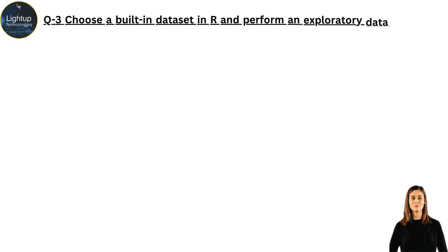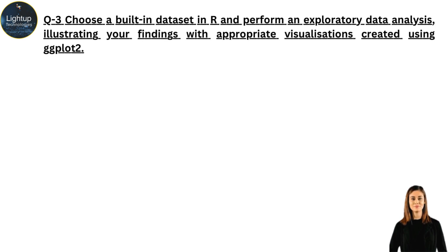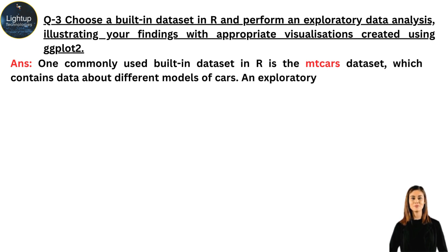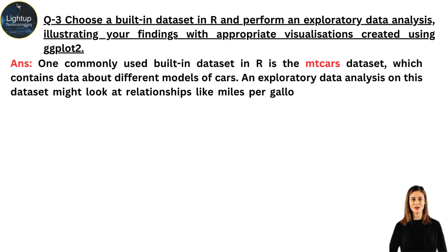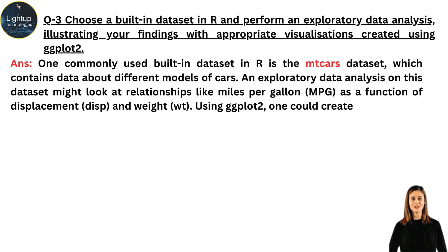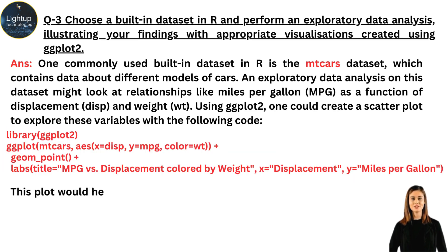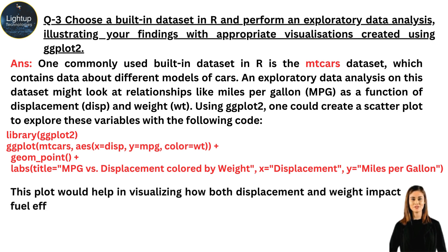One commonly used built-in dataset in R is the mtcars dataset, which contains data about different models of cars. An exploratory data analysis on this dataset might look at relationships like miles per gallon (MPG) as a function of displacement (disp) and weight (wt). Using ggplot2, one could create a scatter plot to explore these variables, which would help in visualizing how both displacement and weight impact fuel efficiency.